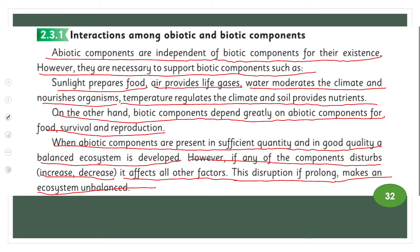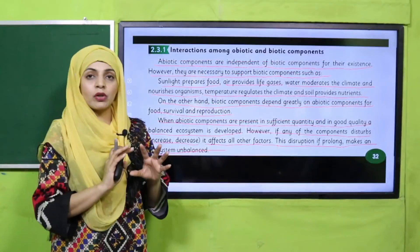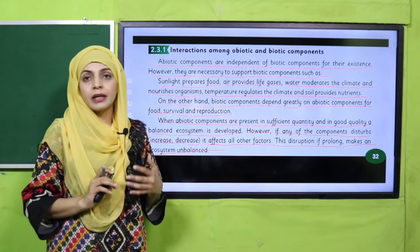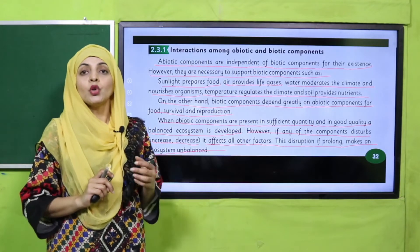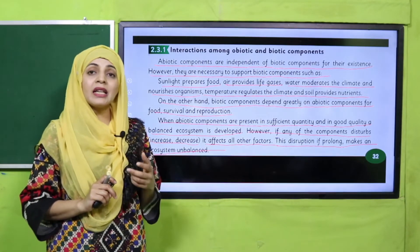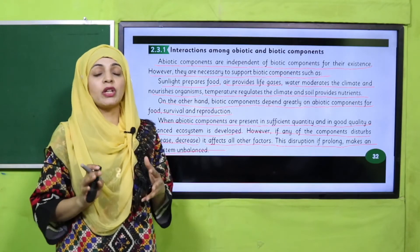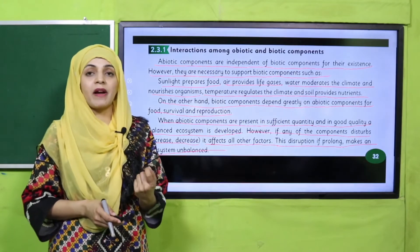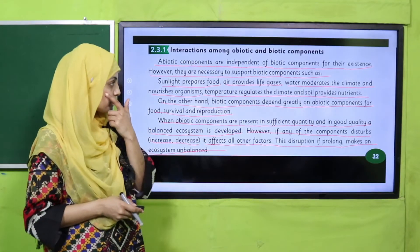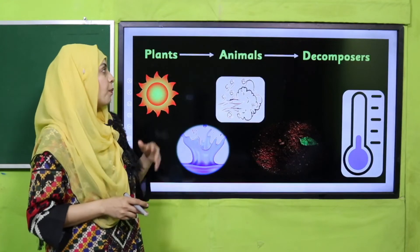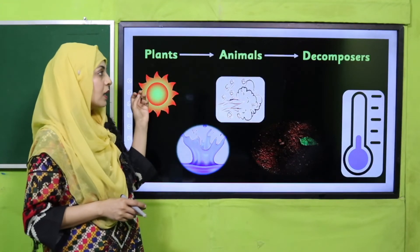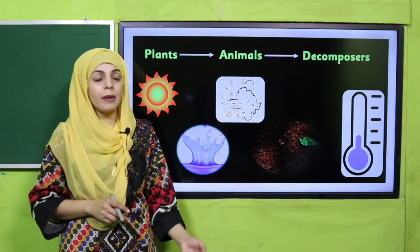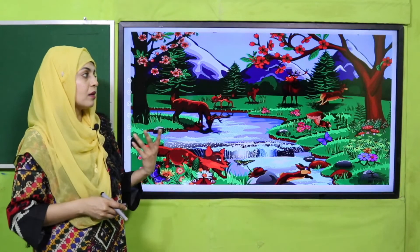If in any ecosystem any abiotic factor — water, soil, sunlight, temperature, or air — is disturbed, increased, decreased, or absent, then definitely the ecosystem will be disturbed. If it is disturbed for a long time, the ecosystem will become unbalanced and the biotic factors — the life forms — will be disturbed as well. Plants, animals, and decomposers are the biotic factors. Sunlight, water, air, soil, and temperature are the abiotic factors which interact together and that is how balance is maintained.